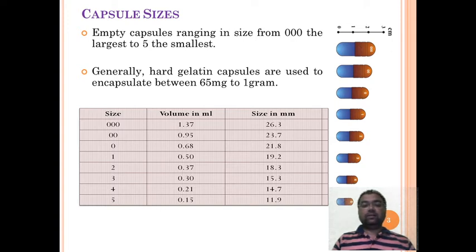In this table you can observe triple zero size is the largest which has volume 1.37 ml and maximum size is 26.3 millimeters. The smallest is size five with 0.15 ml volume and 11.9 mm size.